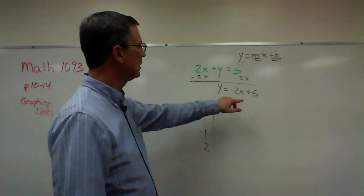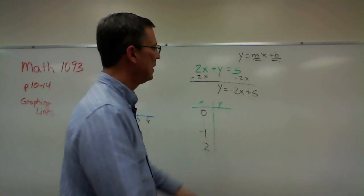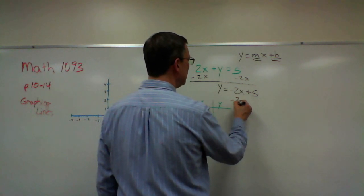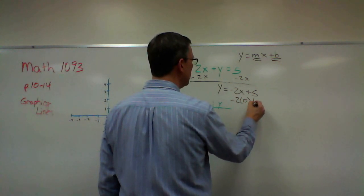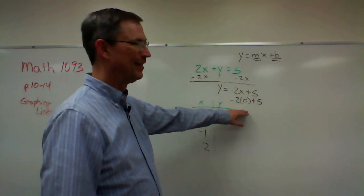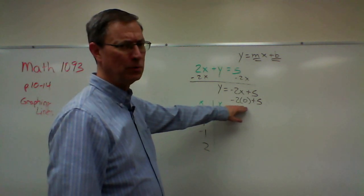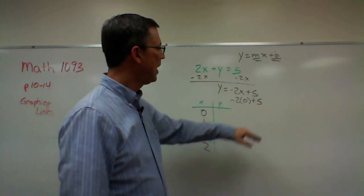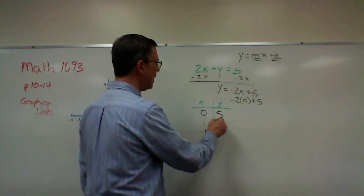Now I'm going to take the first value for x, plug it in here and solve. So what I have here is negative 2 times zero plus 5. Can you do that in your head? Negative 2 times zero, that's the hard part, right? Plus 5. So we get 5.